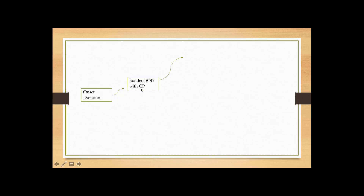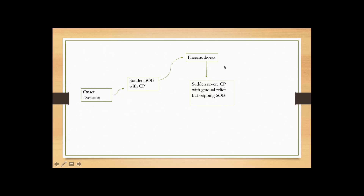When you have sudden onset of chest pain and shortness of breath, ask if the patient had very severe chest pain in the beginning that gradually got better, with ongoing shortness of breath. If the patient gives that classic story, definitely think about pneumothorax. Pneumothorax patients are going to be relatively younger than your coronary ischemia or PE patients, and there are risk factors for this too.